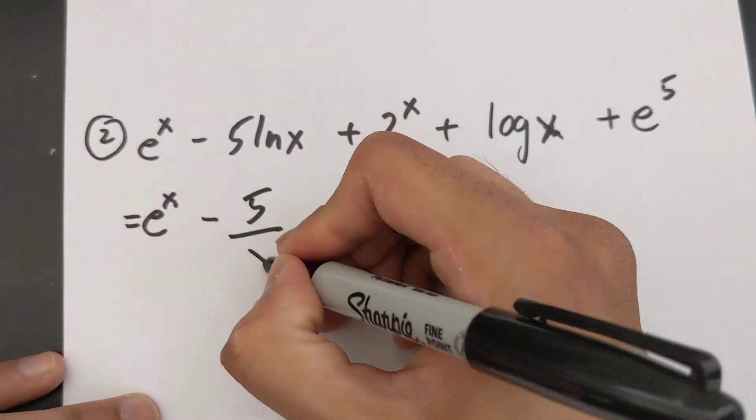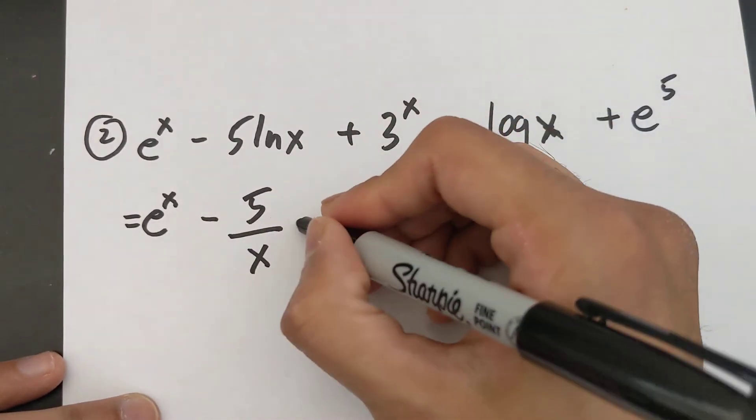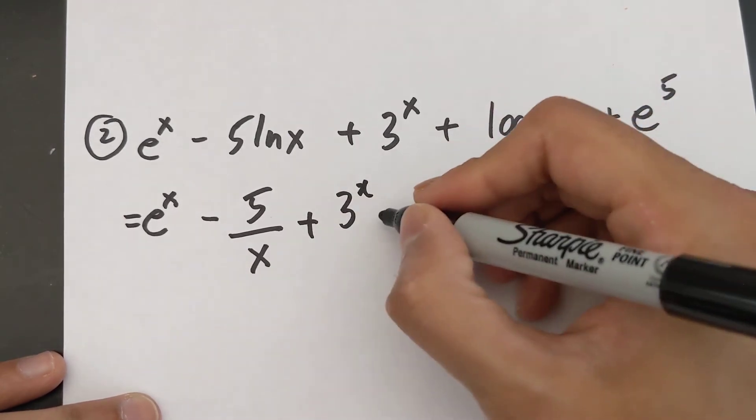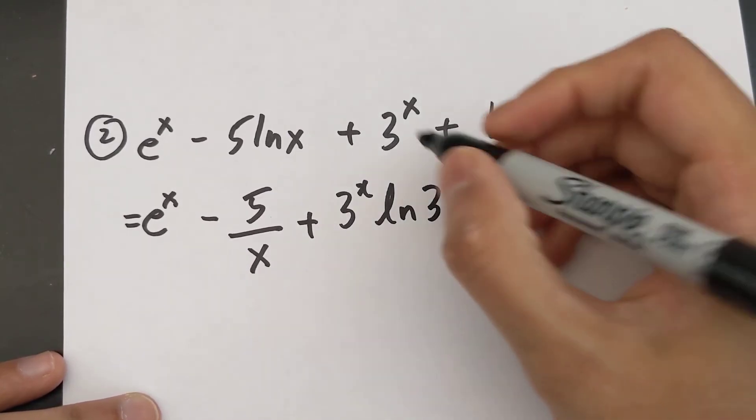Derivative of 3 to the power of x: you write the same thing and then you multiply by ln of the base.